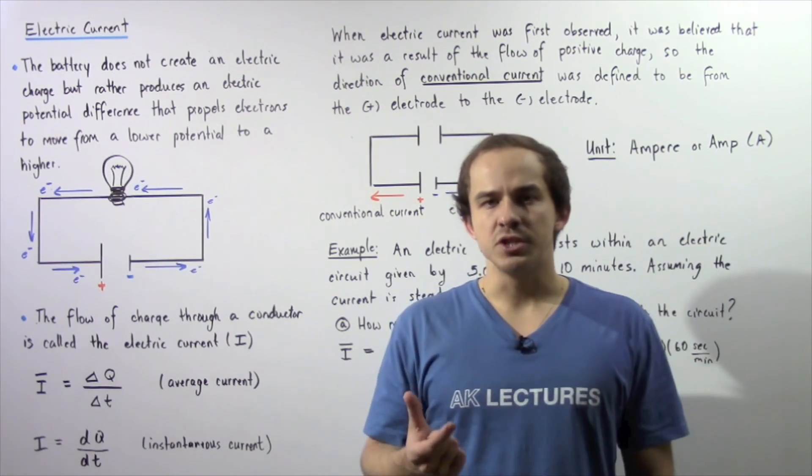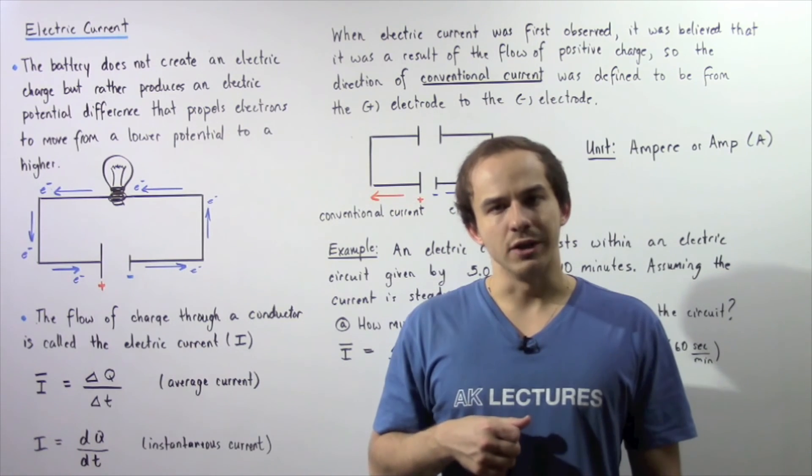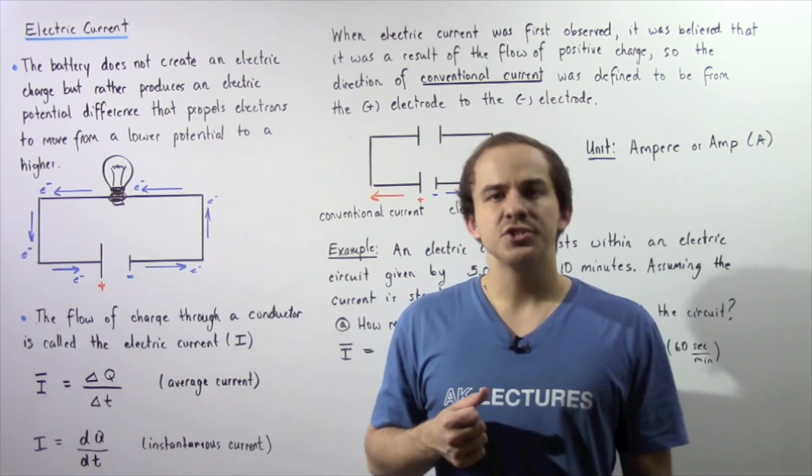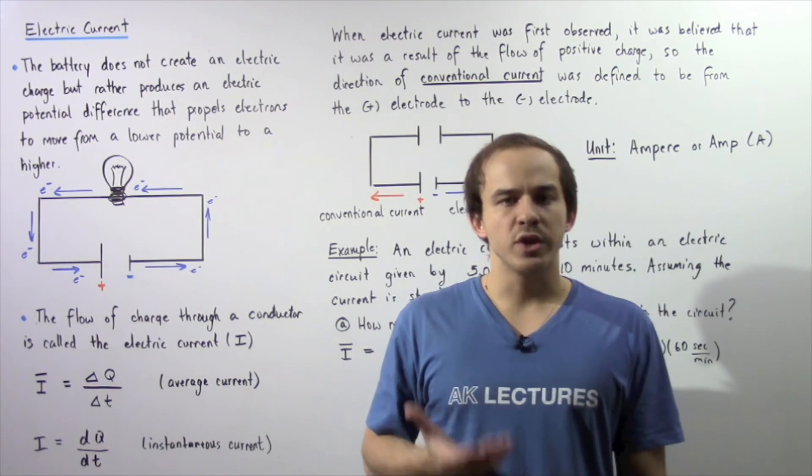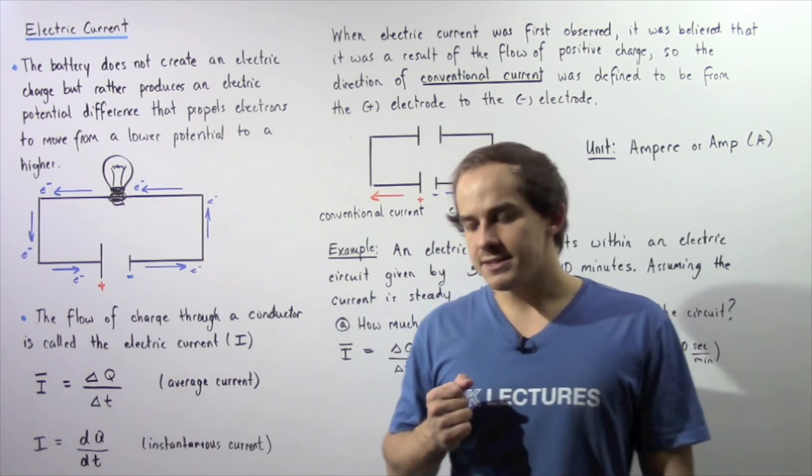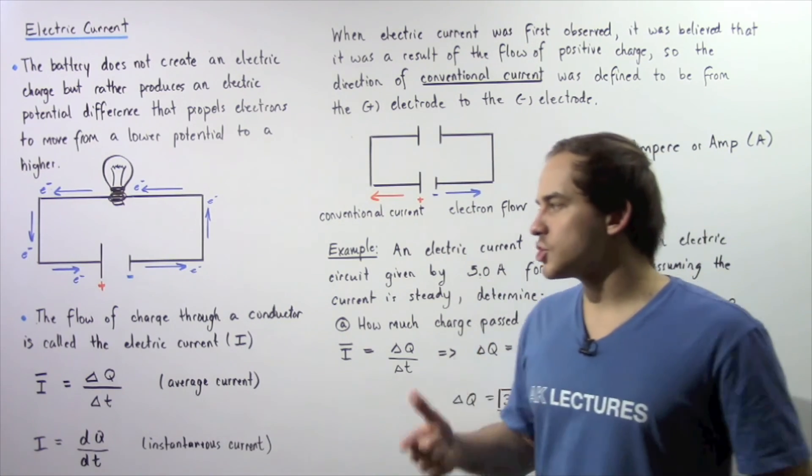One very common misconception about batteries is that batteries create electric charge. Now we know by the conservation of electric charge, electric charge cannot be created and cannot be destroyed. So that basically implies that batteries cannot create electric charge.